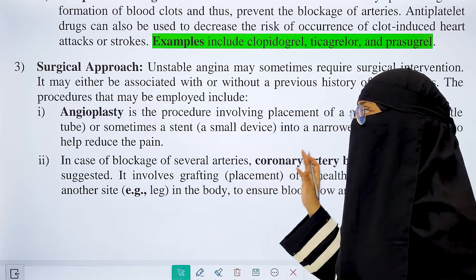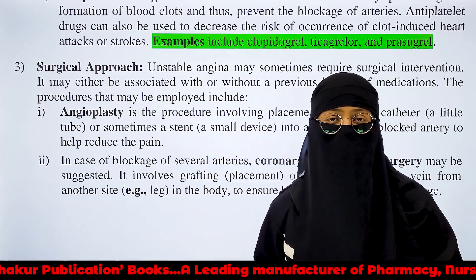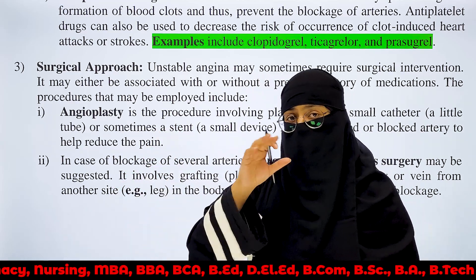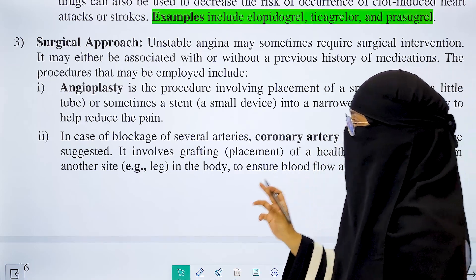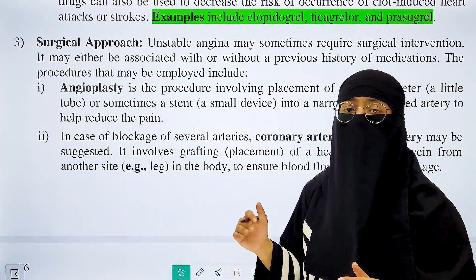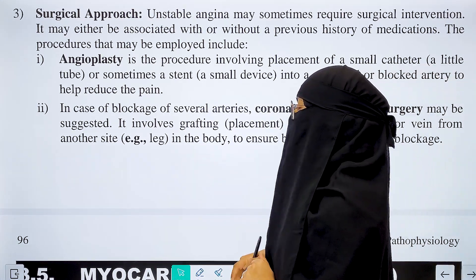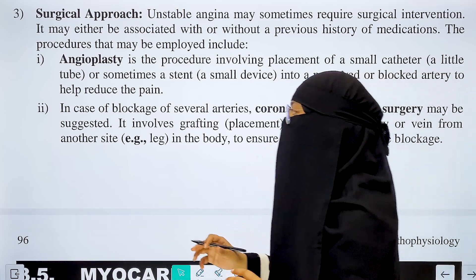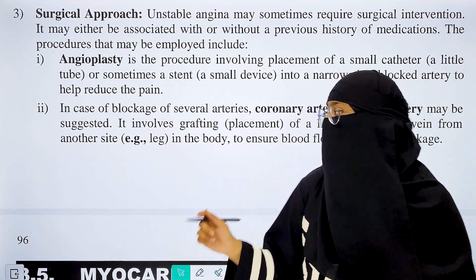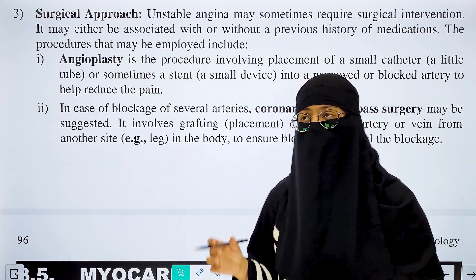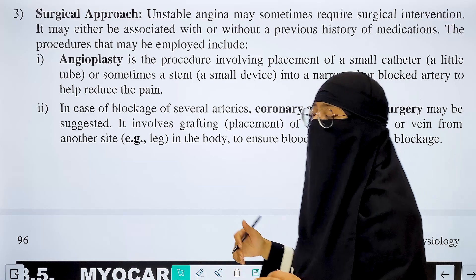In addition to pharmacological and non-pharmacological approaches, there is a surgical approach. Surgical procedures can remove or bypass narrowed and occluded arteries. Angioplasty involves a small catheter inserted into the narrowed artery to open it. Coronary artery bypass surgery involves replacing a blocked artery with a healthy artery or vein from another part of the body.